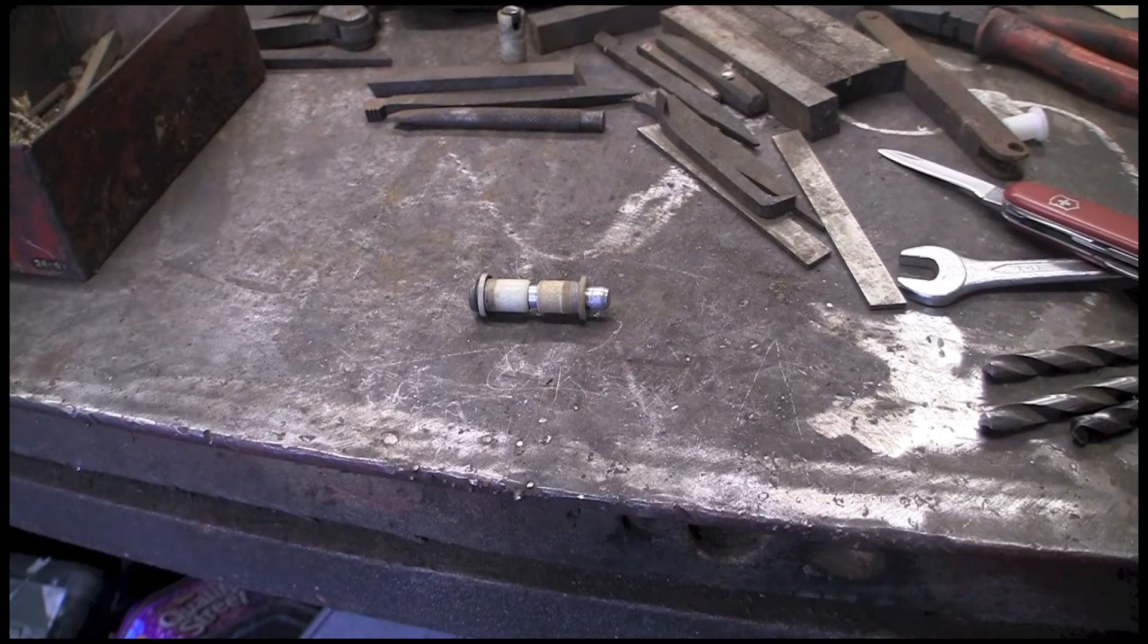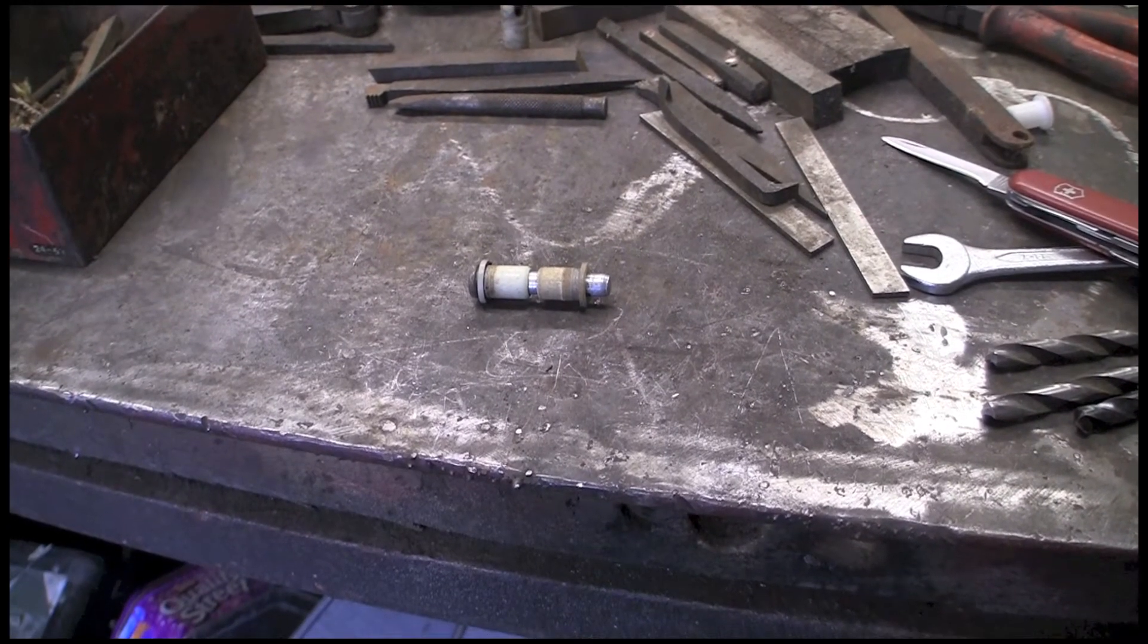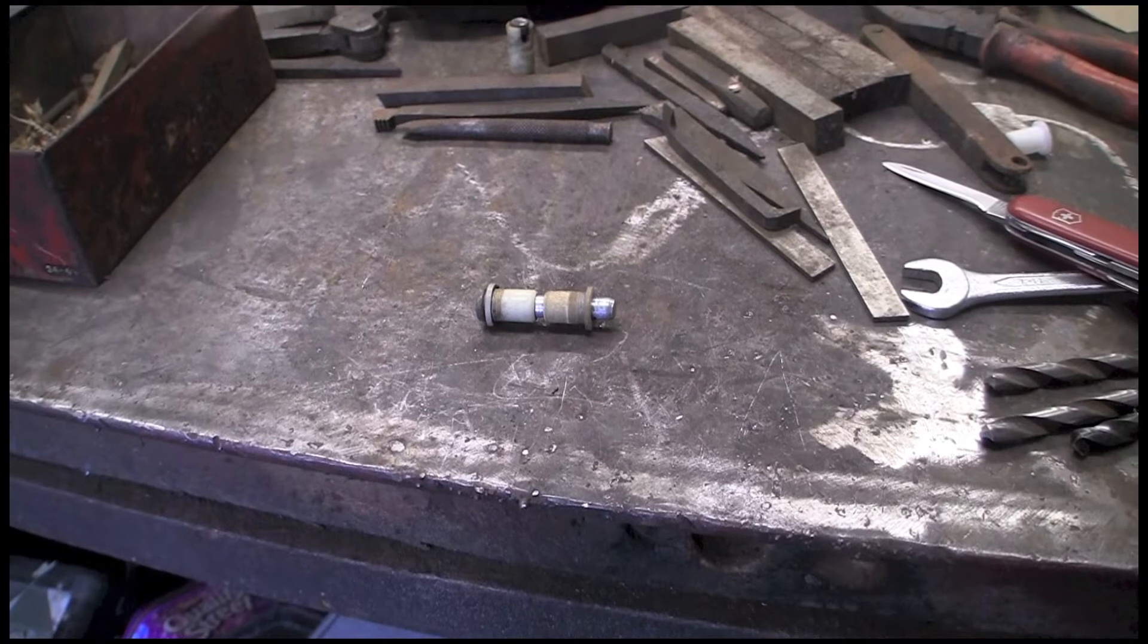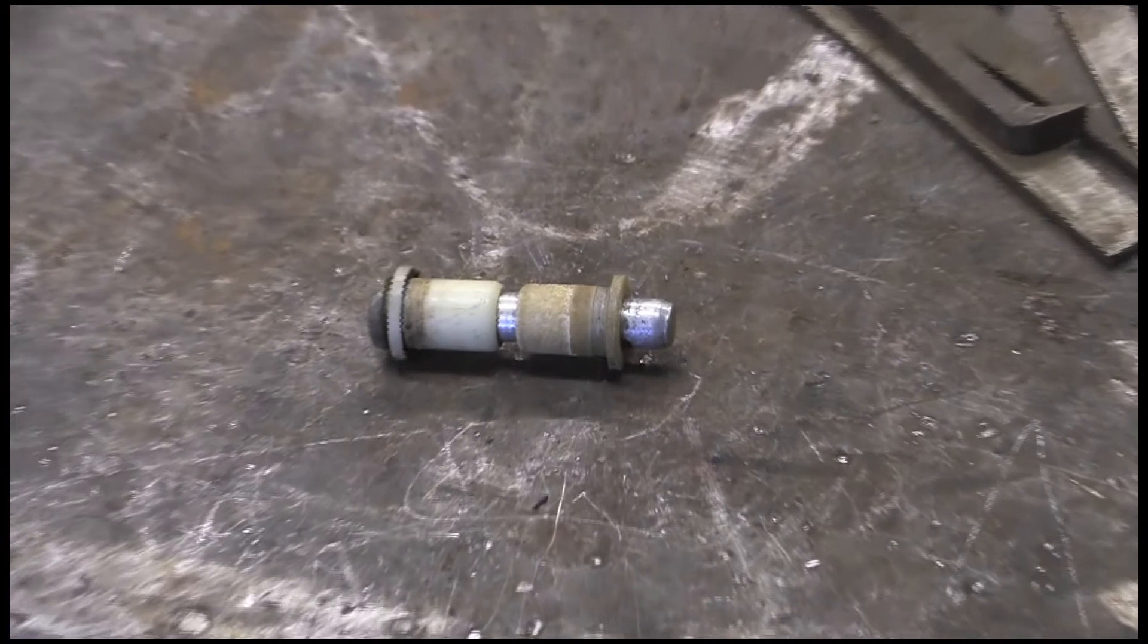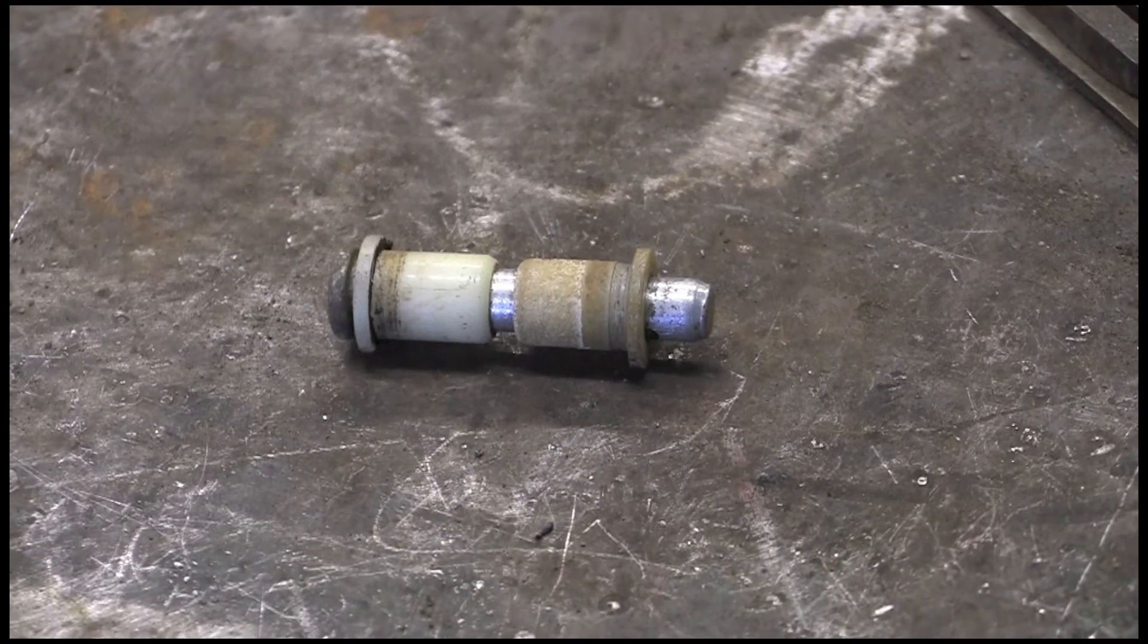Hi guys, quick one today. Bushes from a servo on an old Ford RS2000 Mk2. As you can see they look a bit rough.